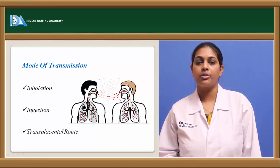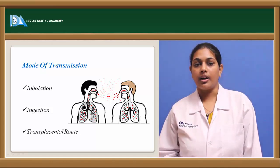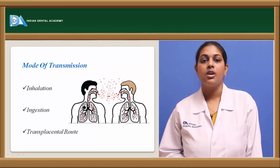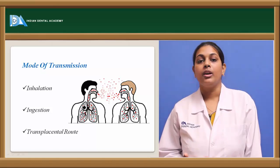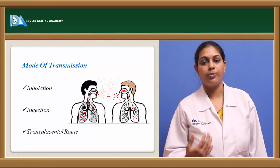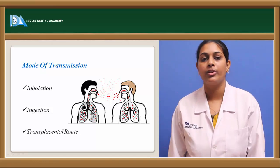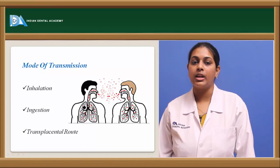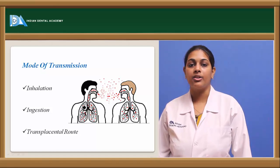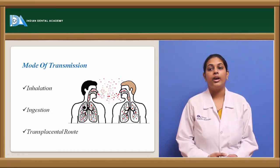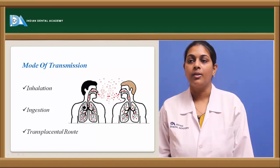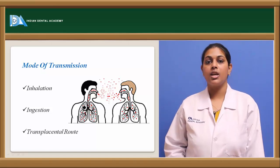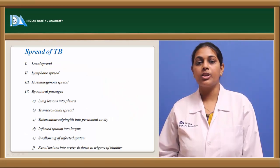Ingesting infected or contaminated water results in tuberculosis development. Ingestion could also be because of self-swallowing of infected sputum which already contains the bacteria. Another route is transplacental, where the baby or fetus attains tuberculosis from the maternal side through placental fluid transfer during the fetal stage. Another mode is inoculation, which is direct contact with the skin.